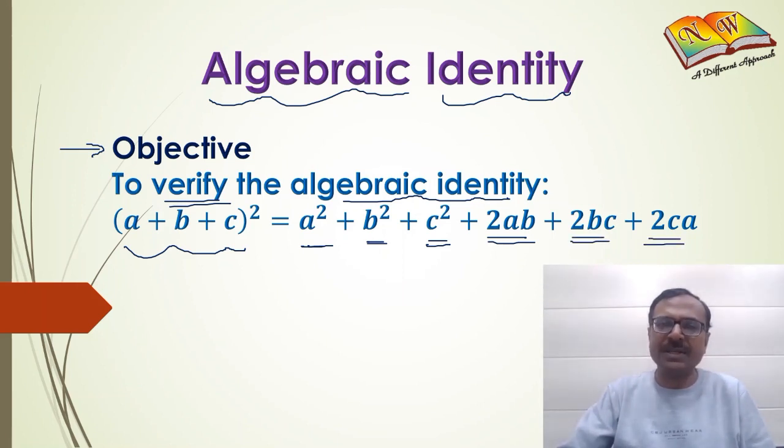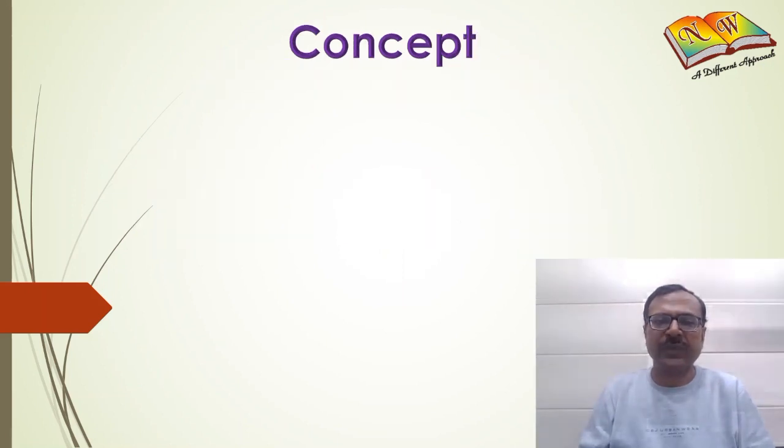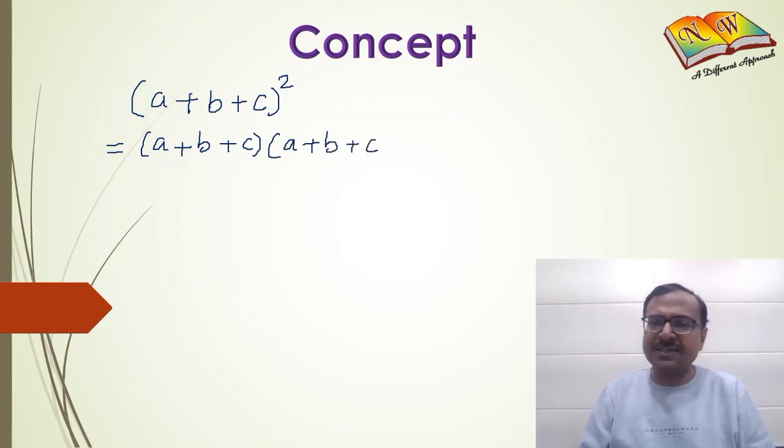Let's see the concept in hand first. The algebraic identities are actually expansions. So if we want to derive (a+b+c)² algebraically, we just have to multiply (a+b+c) by (a+b+c) itself.